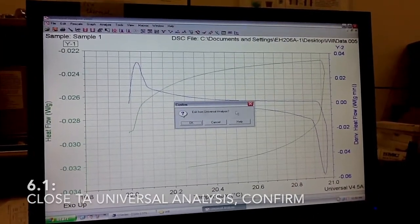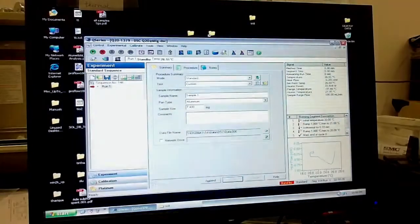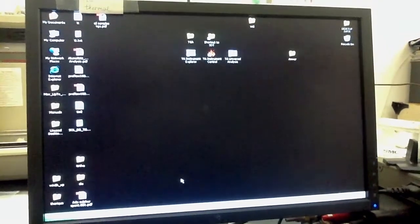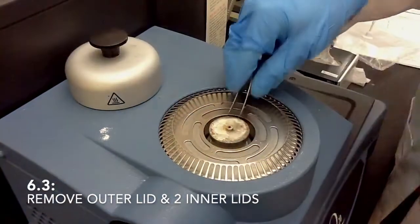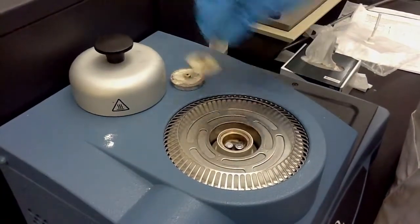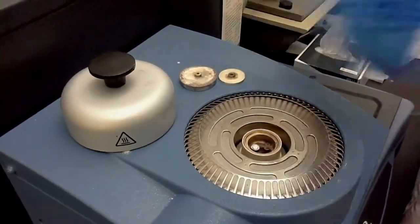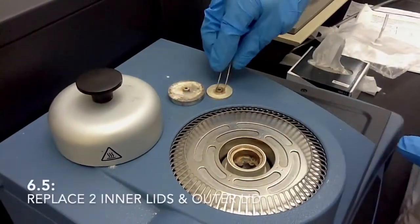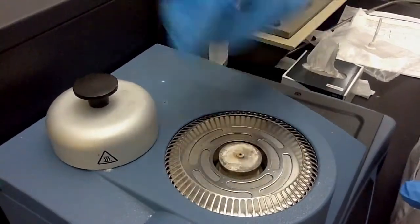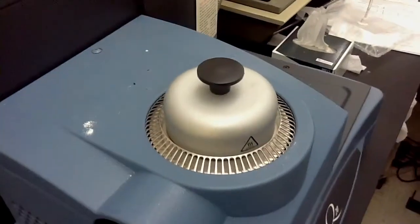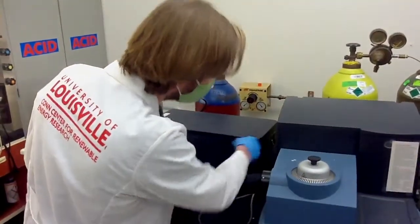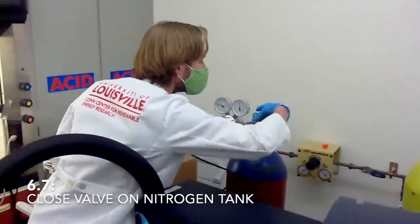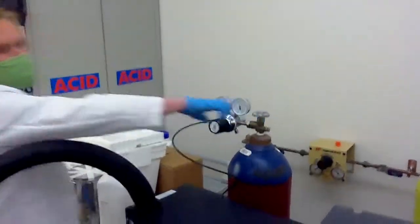When you are finished with everything, you can simply close out the software. You can take these back off and dispose of your sample. And put the tops back on. And finally, you just turn off the cooling system. Close the tank. That's it.